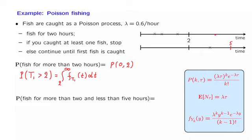It is convenient to think about the Poisson process as follows: think about the process of catching fish at the rate of 0.6 per hour as going on forever. There's a fisherman who fishes forever, except that this fisherman, at either this time under one scenario or at that time under the other scenario,